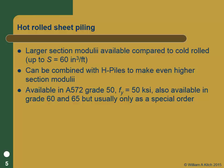The most common hot rolled steel is A572, Grade 50 KSI. You can get it in 60 or 65 KSI, but that's not common. There are A36 sections still out there, particularly in places where shoring is reused a lot — where they drive it, pull it back out, and reuse it for temporary shoring. So you'll still find that in inventory in some places.